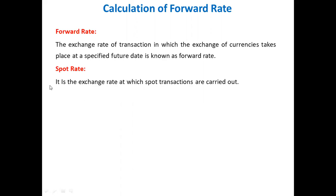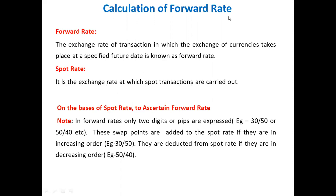The spot rate is the exchange rate at which spot transactions are carried out. On the basis of the spot rate, we ascertain the forward rate. Before going to calculate the forward rate, we must know one thing: in a forward rate, only two digits or PIPs are expressed. For example, 30 bar 50. These are the points we call as swap points, forward points, or PIP points.